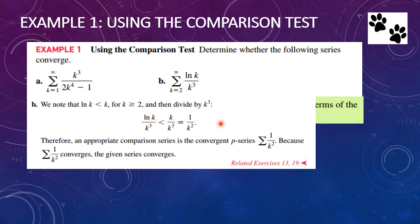For part b, we notice that the natural log of k is less than k for all values k greater than or equal to 2. Dividing each expression by k cubed, we get ln(k)/k³ < k/k³ = 1/k². Therefore, an appropriate comparison series is the convergent p-series 1 over k squared. Since 1 over k squared converges and our series is less than that, by the comparison test our series also converges. There are some more exercises in the text as well.